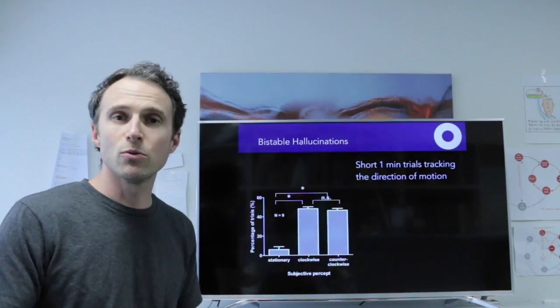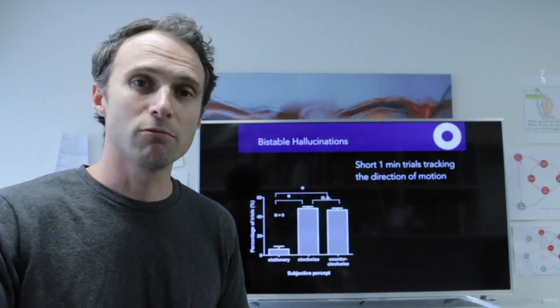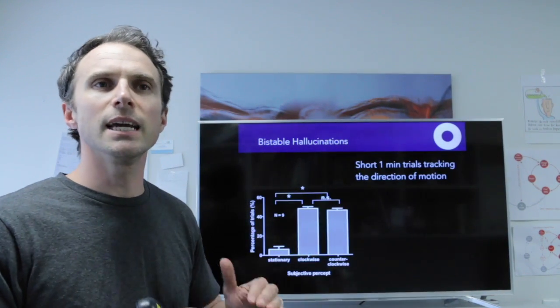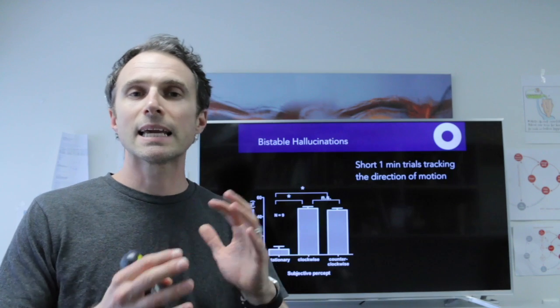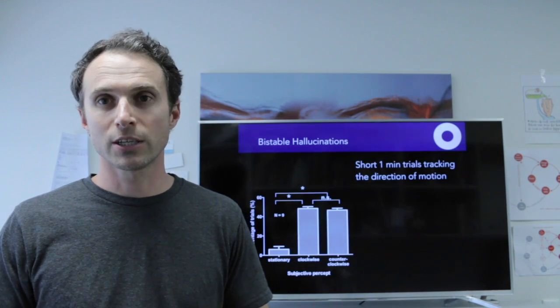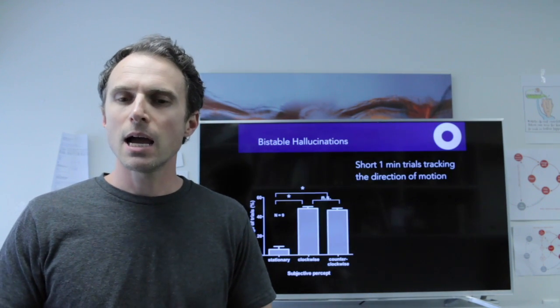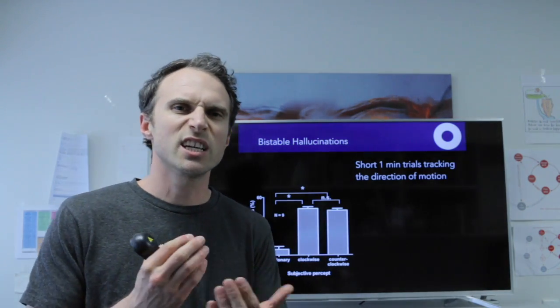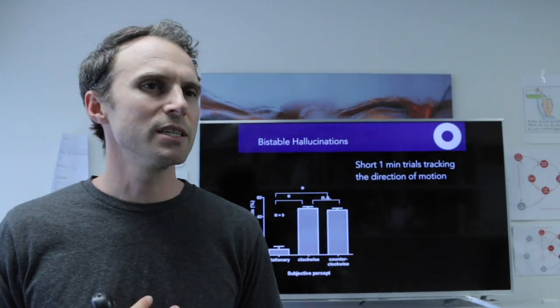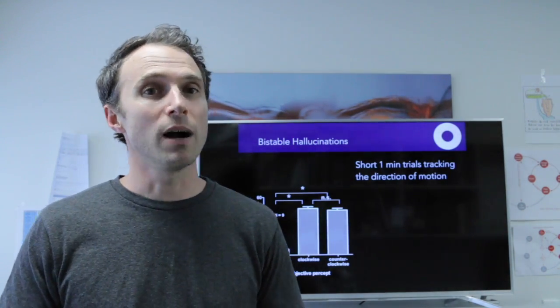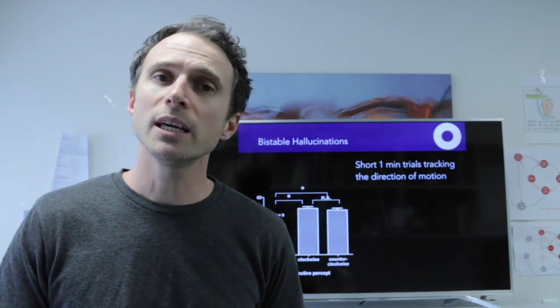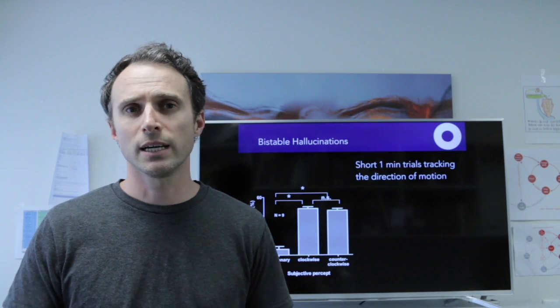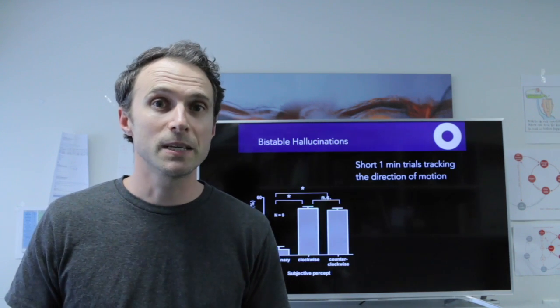So we got people to track these directions. We found that people get about 50-50, about equal amounts of clockwise and counterclockwise motion directions. And that's kind of interesting for various reasons. That suggests that the systems in the brain that are processing this stimulus are what's called bi-stable. And there's hundreds of papers looking at bi-stability in neural systems and bi-stability in the visual cortex and bi-stability in visual perception.